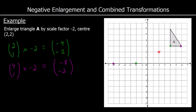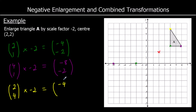And there's one more point. That is right 2, up 4 from the centre. I'm going to multiply it by negative 2, so it will now be left 4, down 8.